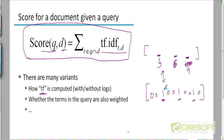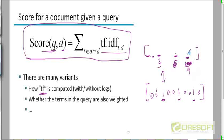What happens when you take the dot product? You multiply the vectors component-wise and then add the result — the dot product is a single number. The 0s will get multiplied with whatever TF-IDF weight is in the document at those positions, giving zero. The 1s will get multiplied with the TF-IDF weight for 'capital,' for 'of,' and for 'India,' and then you add up those three weights. So by taking the dot product of the query vector with the document vector, you get the value of this score.